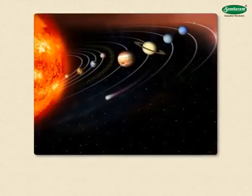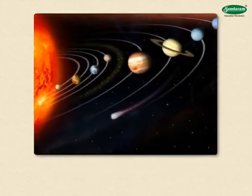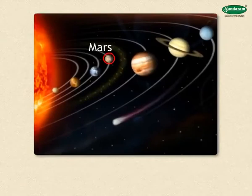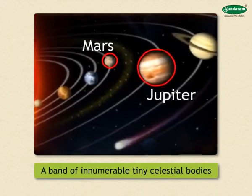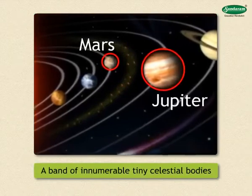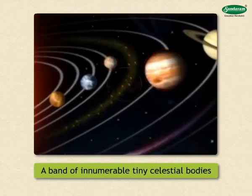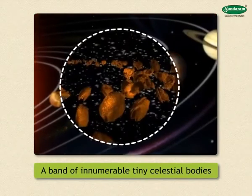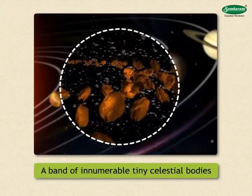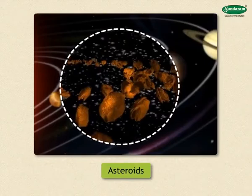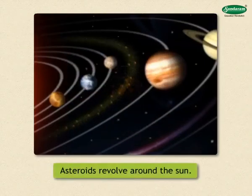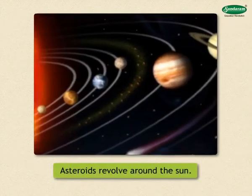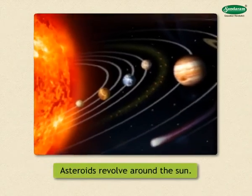Asteroids. Between the planets Mars and Jupiter in the solar system, there is a band of innumerable tiny celestial bodies. These tiny celestial bodies are called asteroids. These asteroids also revolve around the sun.